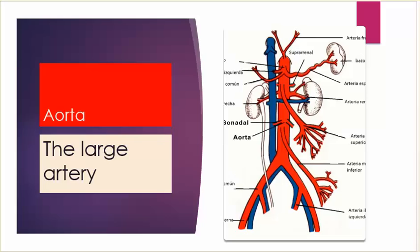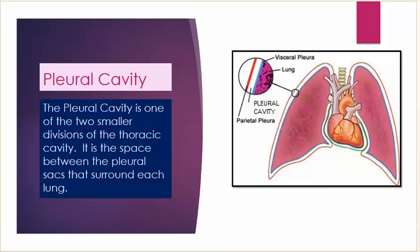Aorta: the large artery. Pleural cavity: the pleural cavity is one of the two smaller divisions of the thoracic cavity. It is the space between the pleural sacs that surround each lung.